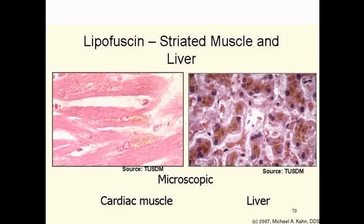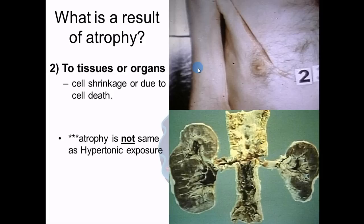Here are some additional pictures of lipofuscin — you can see it in cardiac muscle, which you can identify by its branching pattern, and also in the liver. Here's an example of what happens to tissues when they atrophy: this person had a cut across their shoulder that severed the nerve, leaving the arm limp. You can see how atrophied and shrunken that arm is. In this other case, blood circulation was cut off to the kidney, so this kidney is atrophied.